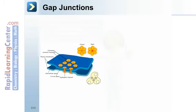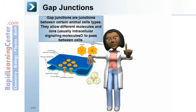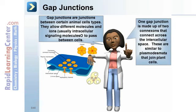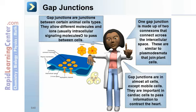Gap junctions are a junction between certain animal cell types. They allow different molecules and ions — usually intracellular signaling molecules — to pass between cells. One gap junction is made up of two connexons that connect across the intercellular space, similar to plasmodesmata in plant cells. Gap junctions are found in almost all cells except mobile cells, and are important in cardiac cells for passing signals to contract the heart.